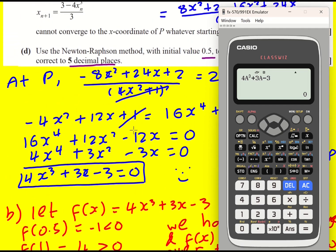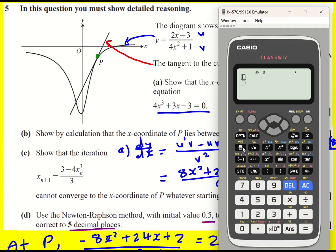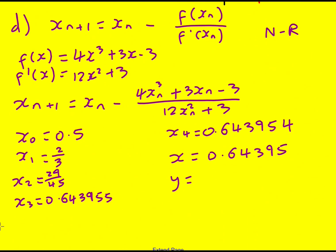And now finally then, let's put it back into this function up here. We actually get minus exactly the same thing. So P has coordinates 0.64395 and minus 0.64395.